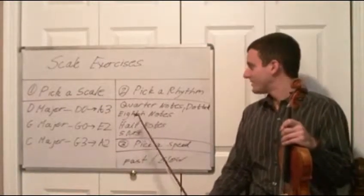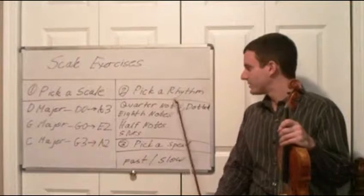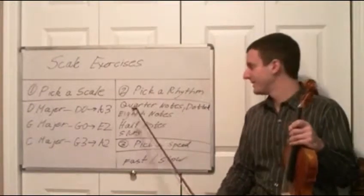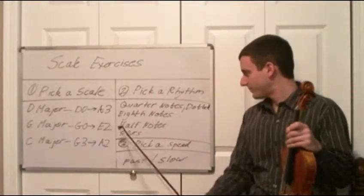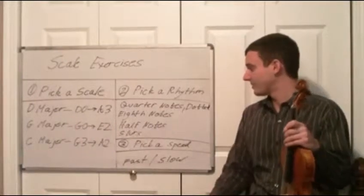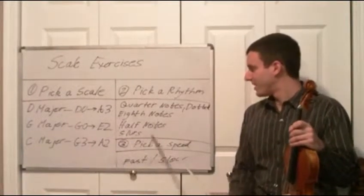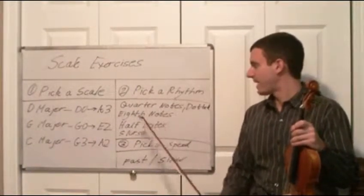So you have the options of using quarter notes, dotted quarter notes, eighth notes, half notes, and you can also put in slurs. Now there's all different kinds of combinations you can have here.